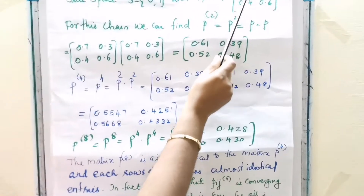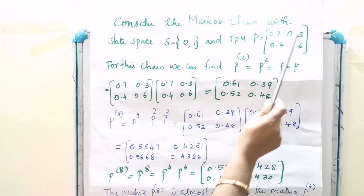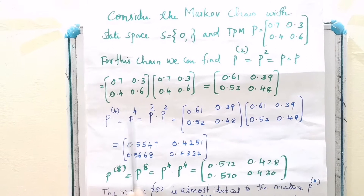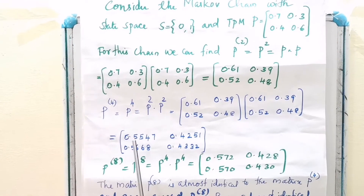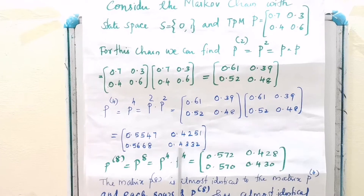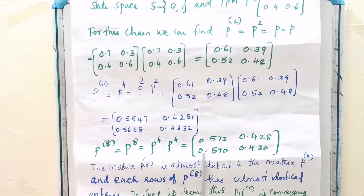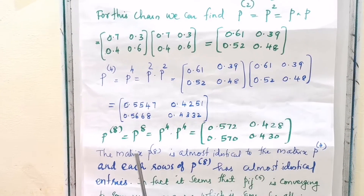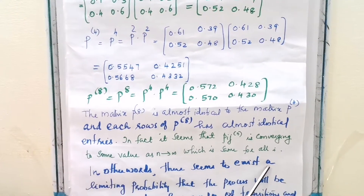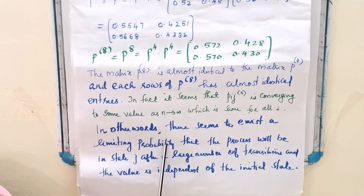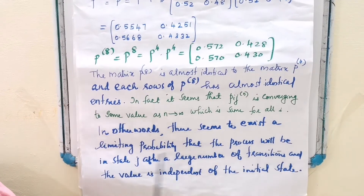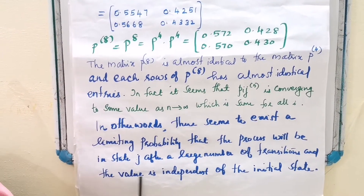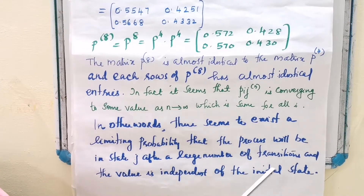That means, in the initial state P = (0.7, 0.3, 0.4, 0.6), but in P⁴ we have approximately 0.55, 0.56, 0.42, 0.43, and in P⁸ approximately 0.5, 0.4, 0.57, 0.4. It seems there exists a limiting probability that the process will be in state j after a large number of transitions, and the value is independent of the initial state.